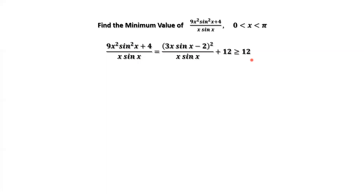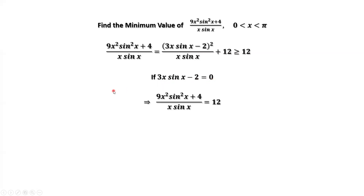Is 12 reachable? We now have the details to show this expression can reach 12. At what situation does the numerator equal zero? This means 3x times sine x minus 2 equals zero. We have 9x squared times sine x squared plus 4, divided by x times sine x, equals 12. So 12 is the minimum value — if this equation has at least one solution, we need to solve this equation.